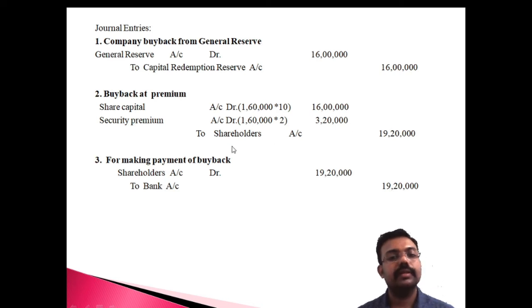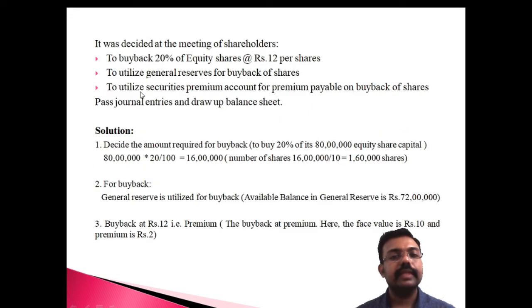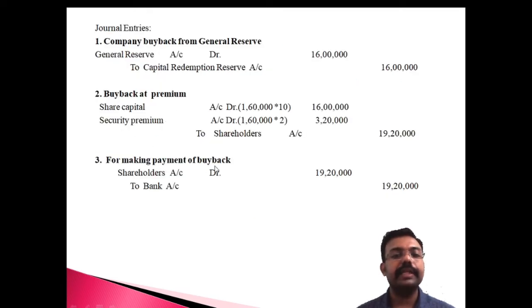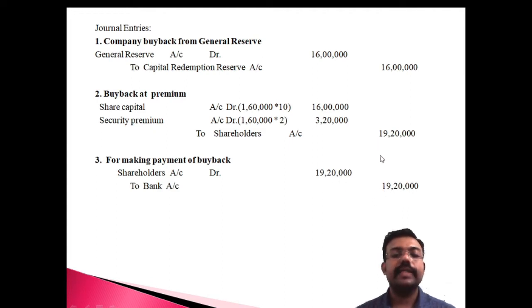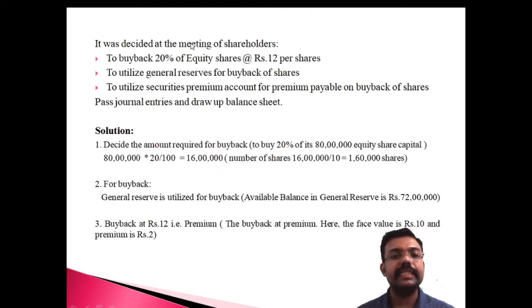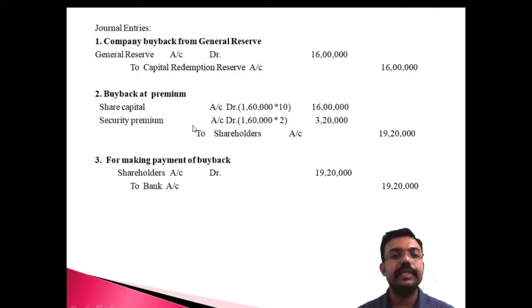The total payable to shareholders is 16 lakh plus 3 lakh 20,000 = 19 lakh 20,000. There are no buyback expenses and no investments. The last entry is for making payment: shareholders account to bank — 19 lakh 20,000. The security premium account is utilized for the premium portion of 3 lakh 20,000.